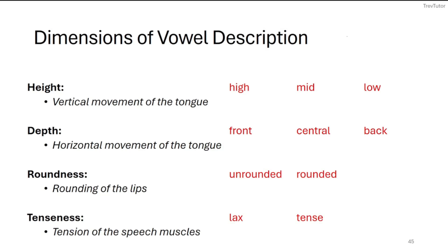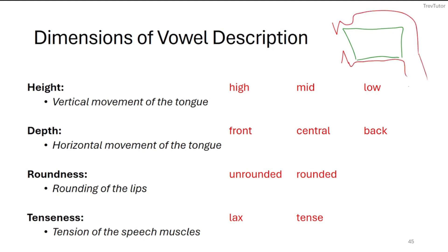Vowels are all made inside your mouth and it's all about what the tongue is doing. You'll see a box representing the top teeth, bottom teeth, a little ridge, space for the tongue, and the vocal folds somewhere down below. The vowel space tells you where your tongue is in relation to the sounds you're making.